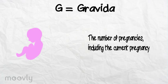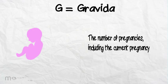For example, a woman is six weeks pregnant. She has two-year-old twins at home that were delivered at 37 and 2/7 weeks gestation. She also has a five-year-old daughter that she carried to 36 and 4/7 weeks. She previously had a miscarriage at 10 weeks gestation. What is her gravidity? Her gravidity is four.